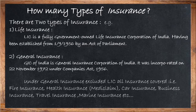There are mainly two types of insurance: life insurance and general insurance. Life insurance is a fully government-owned Life Insurance Corporation of India, having been established from 1st September 1956 by an act of parliament. The second one, General Insurance, is briefly abbreviated as GIC of India — General Insurance Corporation of India — incorporated on 22 November 1972 under Companies Act 1956.